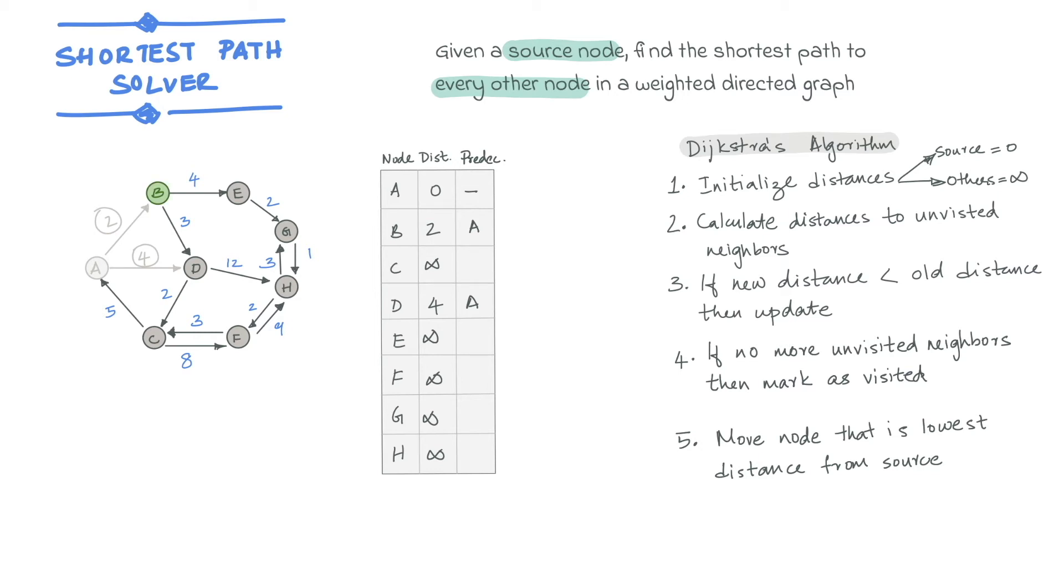Now we repeat the steps 2 and 3 for B. The distance to get to D from the source via B is the distance to get to B from the starting point, which is 2 plus the distance to get to D from B, which is 3. So the total distance from the source node A to D via B is 5.